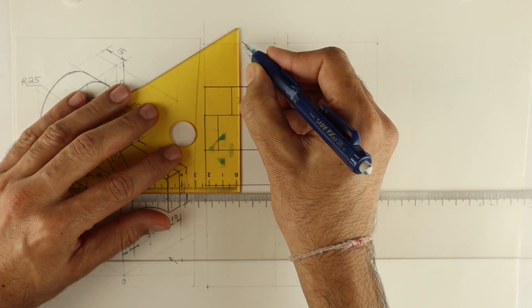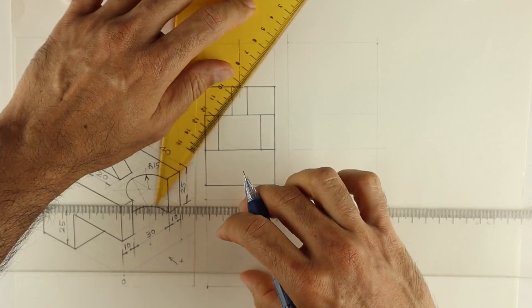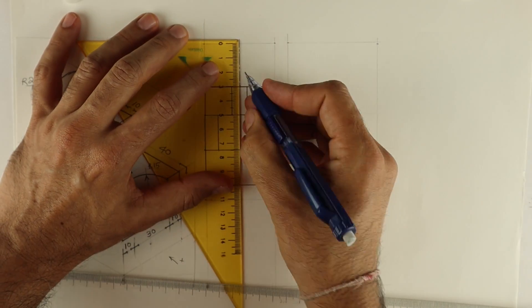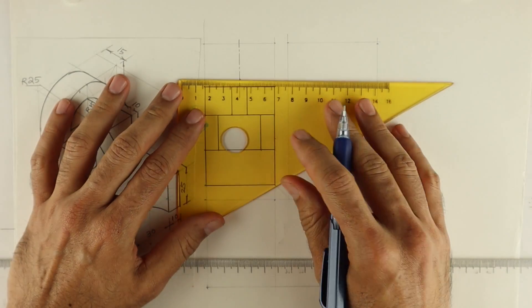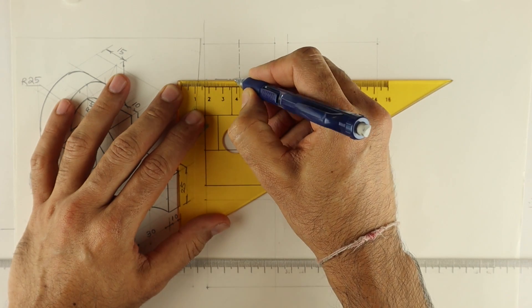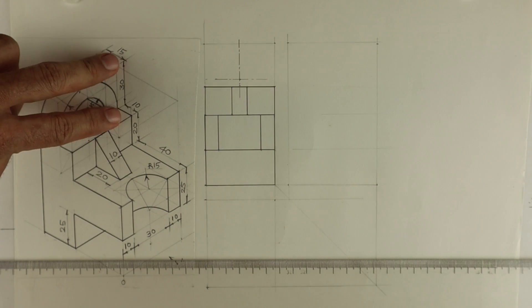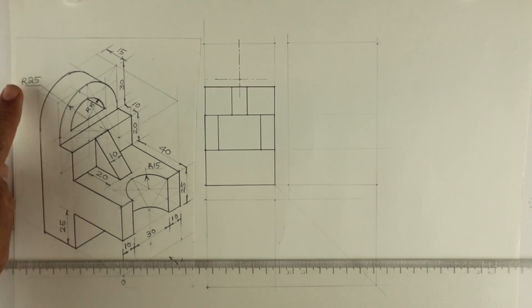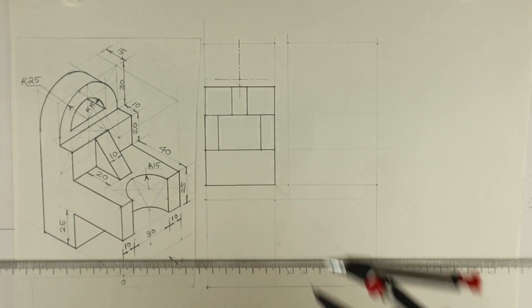Now if you see, the height is 30 and the radius what we need to draw is 25. So from top we'll go down by 25. Remember, there will be a 5mm gap. So this is center line for the circle. Now this is 30 but the radius is 25, so from top you go down by 25 and you draw a circle.